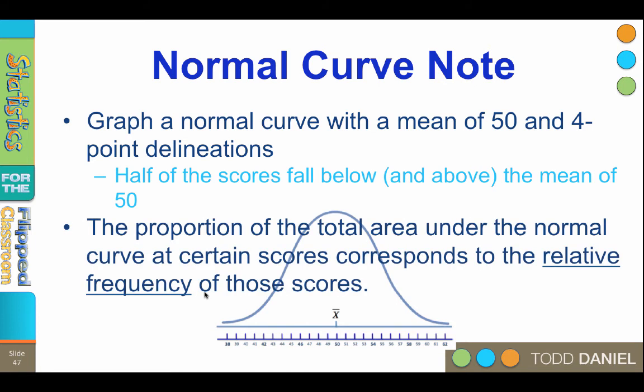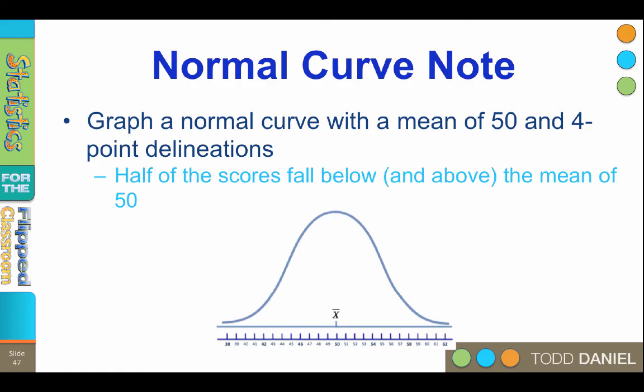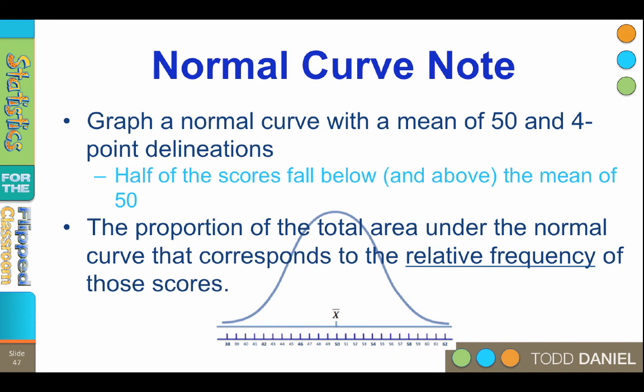The next thing that we could do is measure the proportion of the scores that fall within a certain range above or below the mean. The proportion is the total area under the normal curve that corresponds to the relative frequency of those scores.